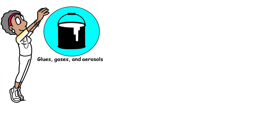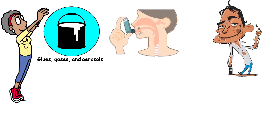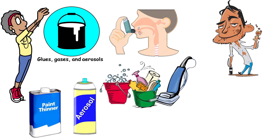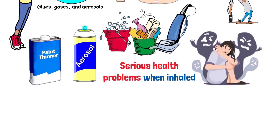Glues, gases, and aerosols are inhalants commonly abused for their intoxicating effects. Found in household products like paint thinner and aerosol sprays, these substances can cause euphoria, hallucinations, and serious health problems when inhaled.